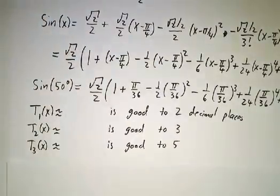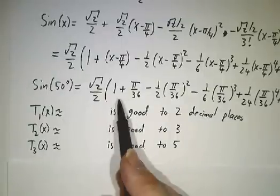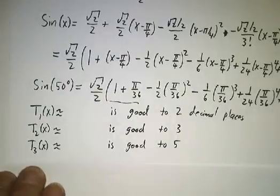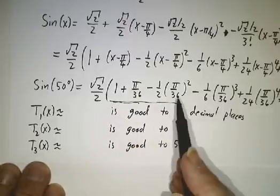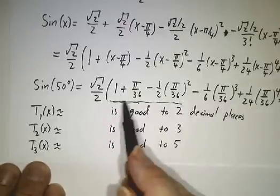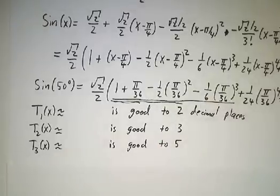And if you evaluate these numbers, you just take these two terms, you're gonna get two-digit accuracy. You take these three terms through the quadratic term, you get three decimal place accuracy. If you evaluate it out through the cubic term, you get five decimal place accuracy.